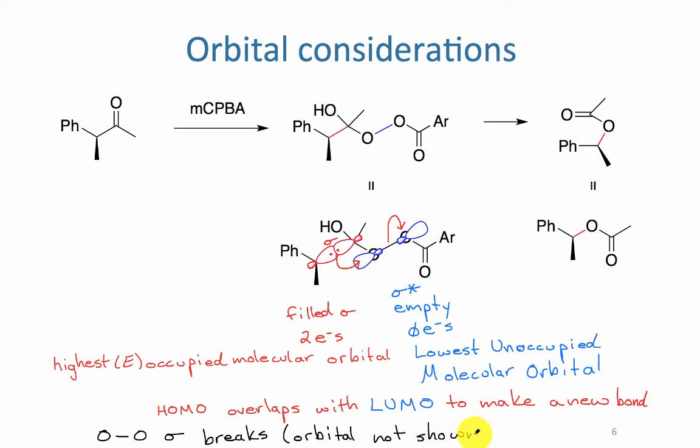Because the carbon that held the HOMO was not really reactive, because its electrons are staying in the same position, there's no change in the stereochemistry of that migrating group. So there's a retention of configuration of the migrating group.